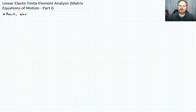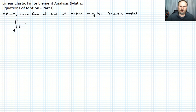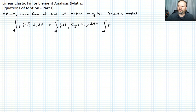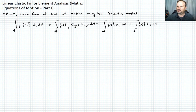The weak form of the equations of motion using the Galerkin method looked like as follows. We have the integral over the volume of rho times the vector of interpolation functions N_ui double dot dV, plus the integral over the volume of N partial with respect to x_j times c_ijkl u_k comma l dV, equals the integral over the volume of N times body force vector b_i dV plus the integral over the surface of N times t_i dS. Let's call that equation one.